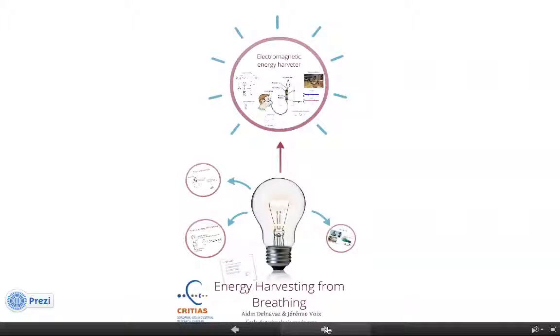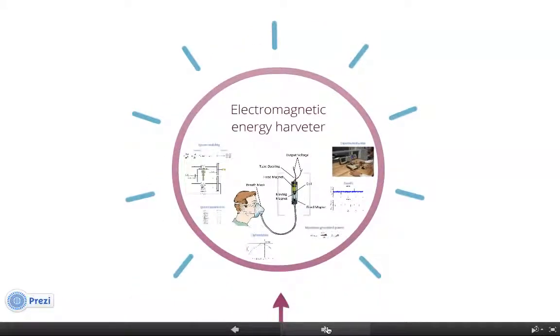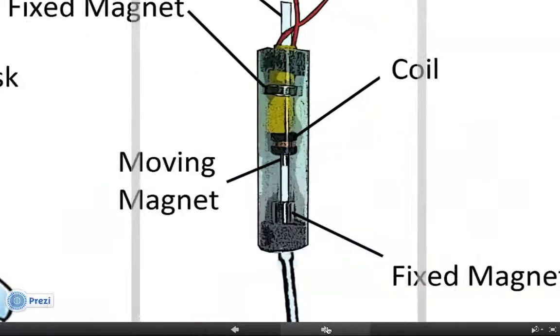Among these signs, we have proposed an electromagnetic energy harvesting mechanism. We can see at the center of this slide, it's composed of a breath mask which is connected to the energy harvesting module by a tube. The heart of the system is the energy harvesting module, which is composed of two fixed magnets outside the tube, bottom and top, and one free magnet inside the tube. Also, there is a coil wound all around the free magnet outside the tube.